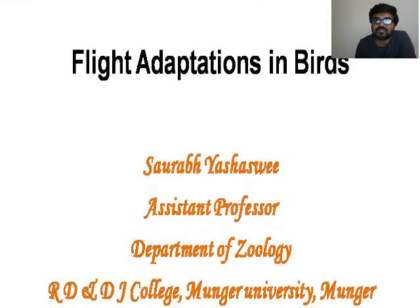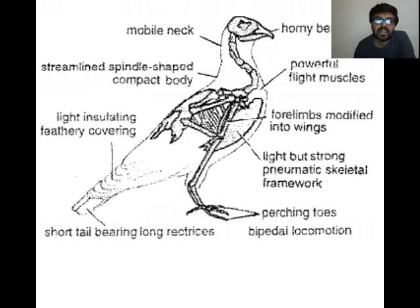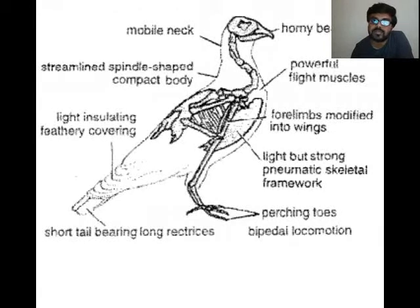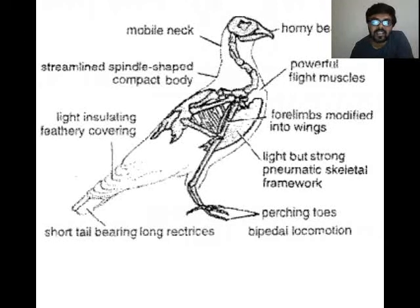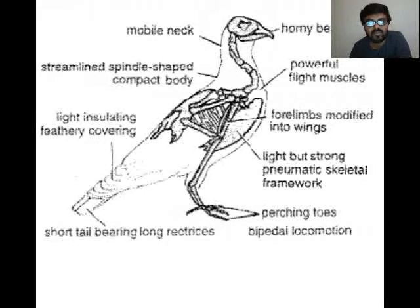I would like to show you a picture of a bird so you can see how it looks. When you look at the morphology of a bird, it has a streamlined, spindle-shaped, compact body. This streamlined spindle body allows minimum air resistance during flight. The next feature is the mobile neck and beak — the mobile neck helps birds in offense and defense, while the beak enables them to pick up food grains efficiently.